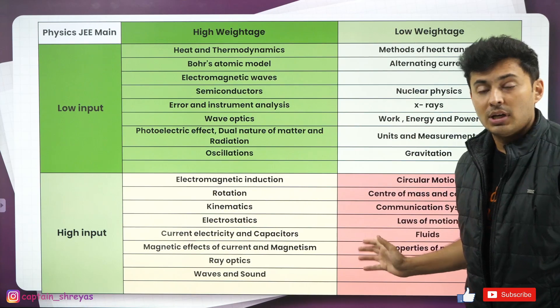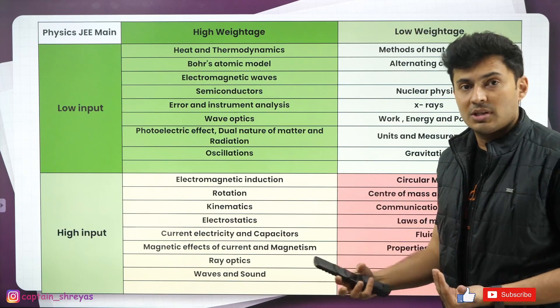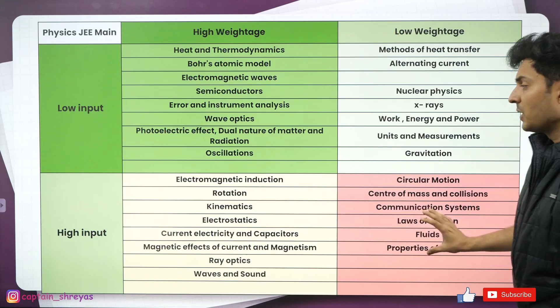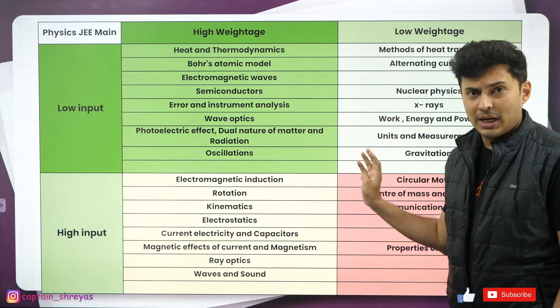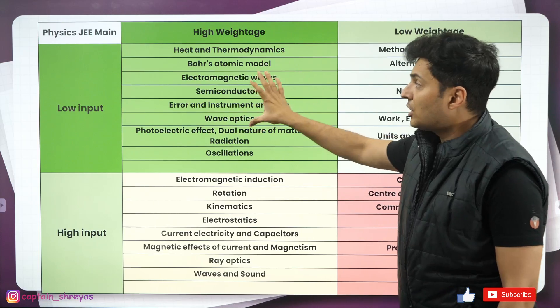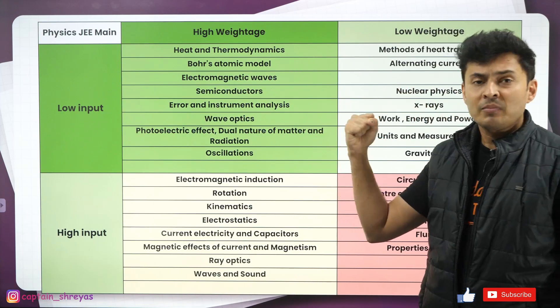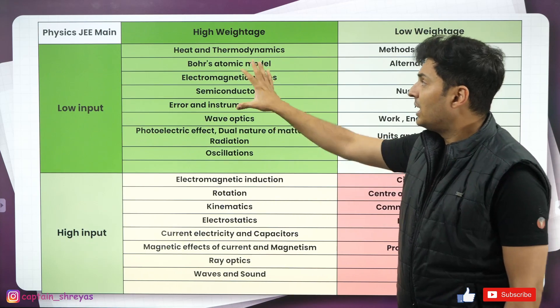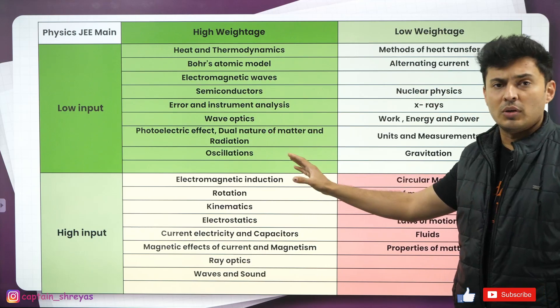These topics are high input. That means you need a lot of focus, a lot of concentration, a lot of concepts are there. And you need to invest a lot of time and energy to study these topics. Now, when you divide all the chapters or topics into four categories, this is the category that should be pakka done. You should be very, very skilled in solving these problems from these topics. Be it heat, thermo, Bohr's atomic model, electromagnetic waves, semiconductors and so on and so forth.